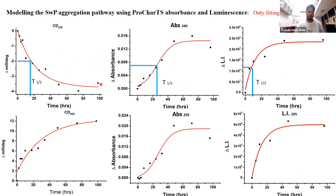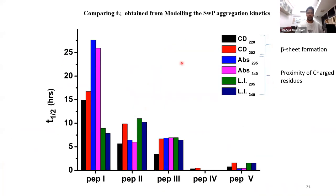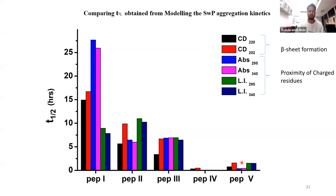We then modeled the kinetics and calculated T-half — the time at which half the aggregation was complete. Plotting T-half for CD, ProCharTS absorbance, and luminescence data for various peptides, we found they were largely correlating with each other, although not exactly in all cases. This suggests that although all methods detected changes, the phenomena underlying each technique are somewhat different.